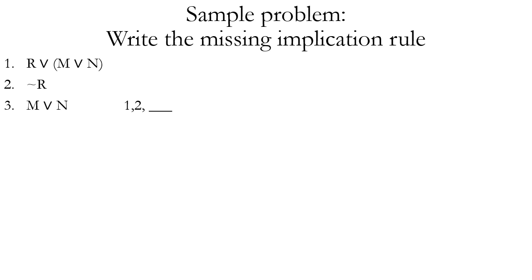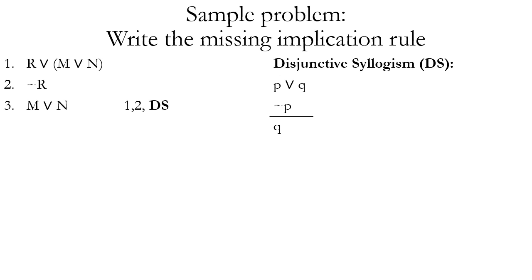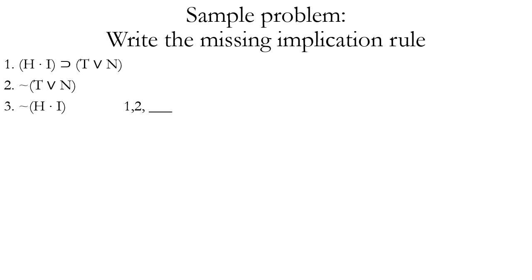Another sample problem: we have a disjunction on line one and the negation of one of the disjuncts on line two. Line three is the other disjunct we're proving true. The answer is DS or disjunctive syllogism. Even though the first line is more complex — the second disjunct is itself a disjunction — that's not relevant. Premise one still has a wedge as the main operator, and premise two negates one of the main disjuncts, so we can conclude the other disjunct, M wedge N, using disjunctive syllogism.